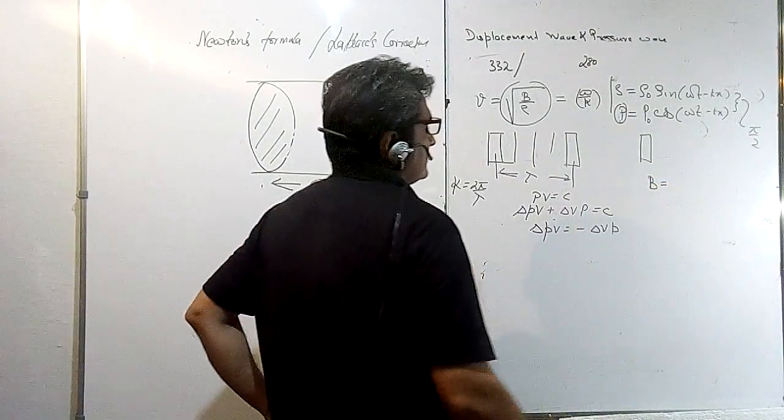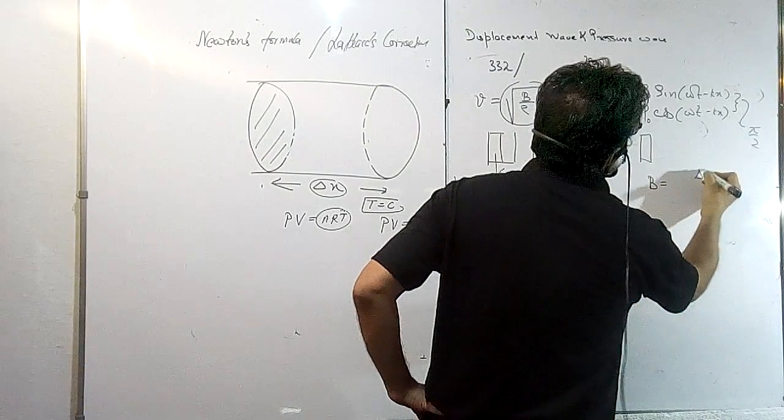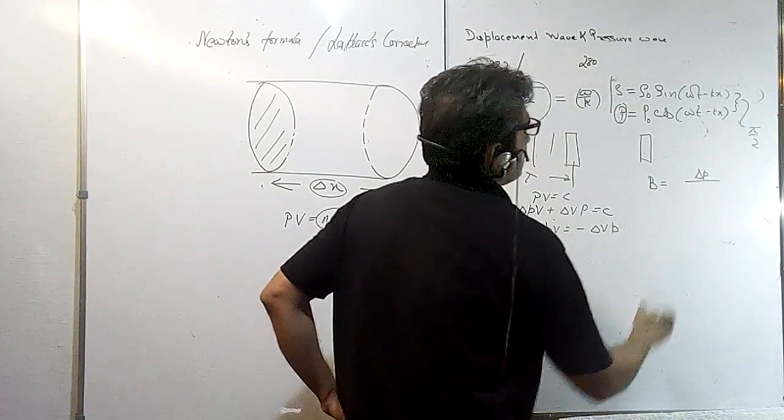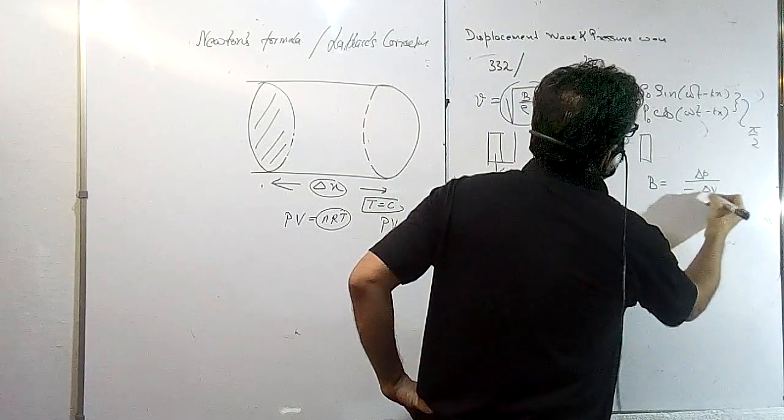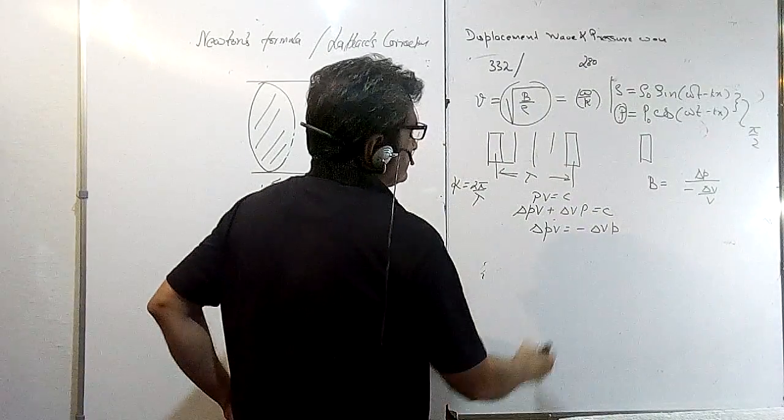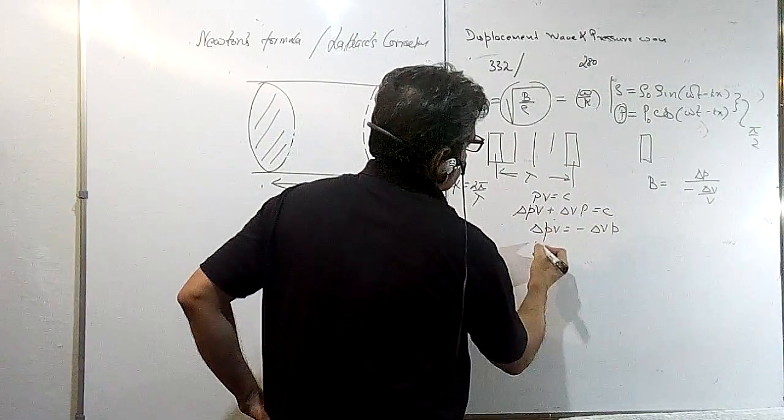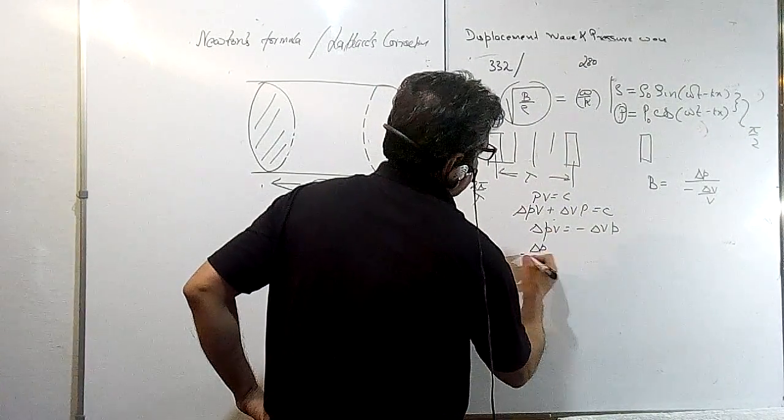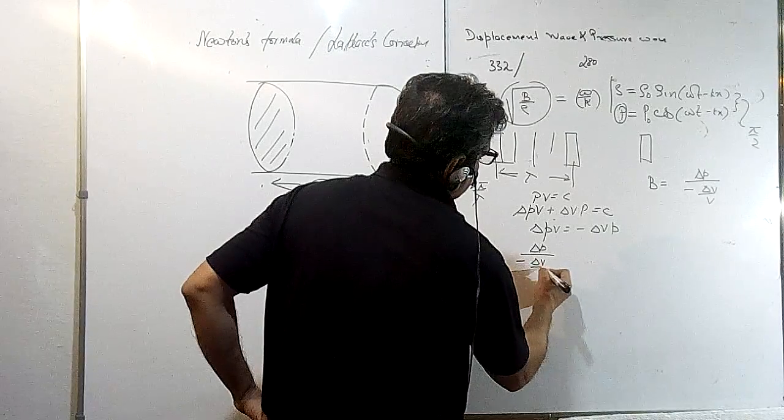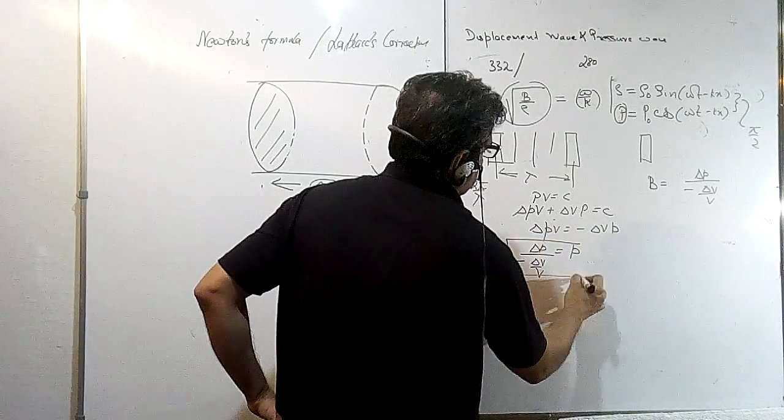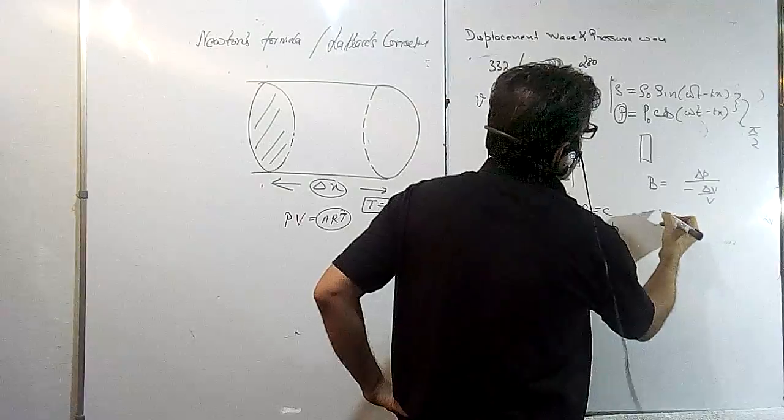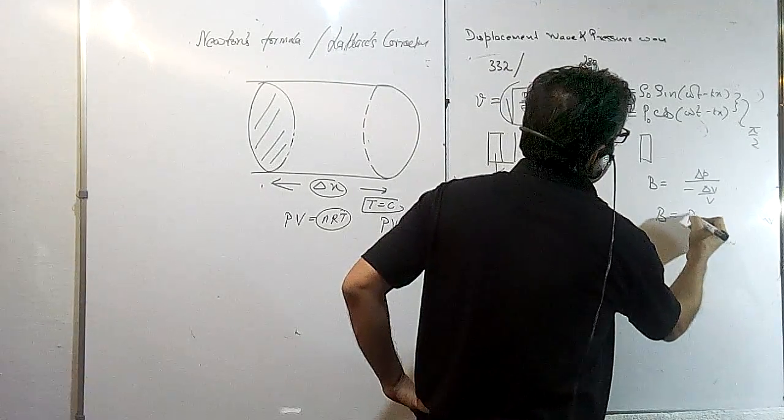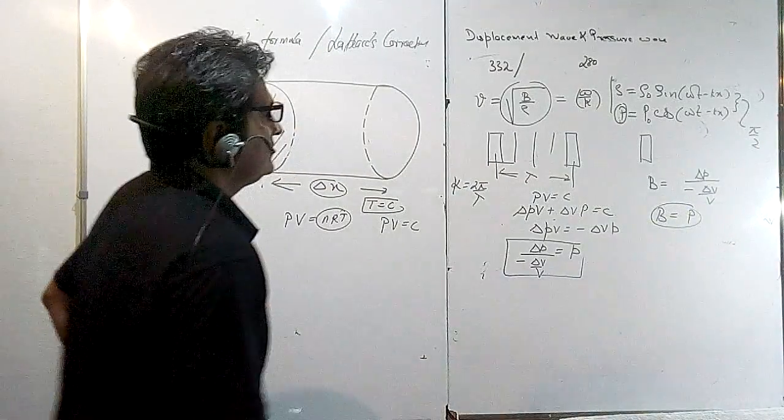So we can write—as we know, the bulk modulus is ΔP upon minus ΔV upon V—so let us write ΔP in terms of ΔV upon V. ΔP upon minus ΔV upon V becomes P, so we can write B as P with Newton's formula.